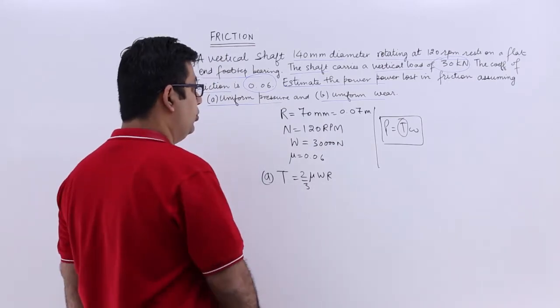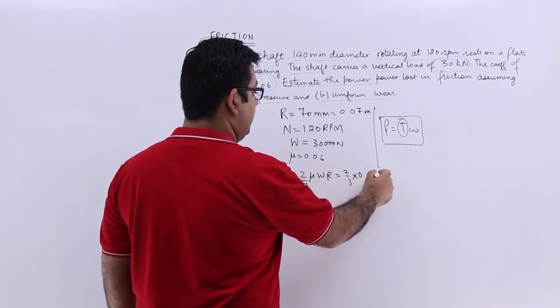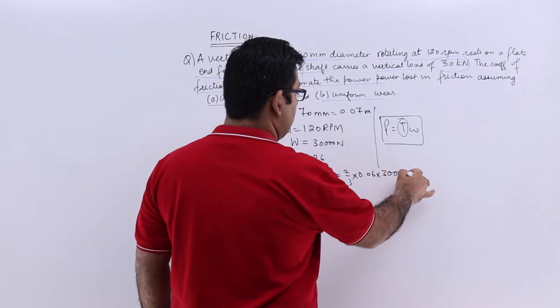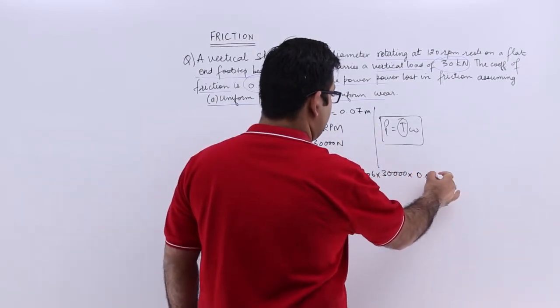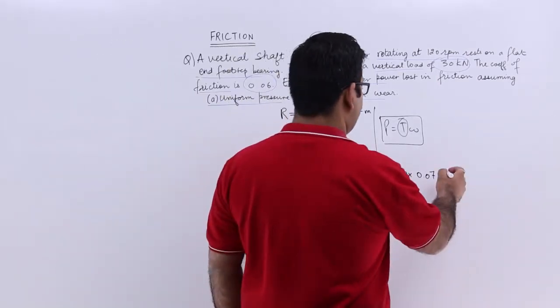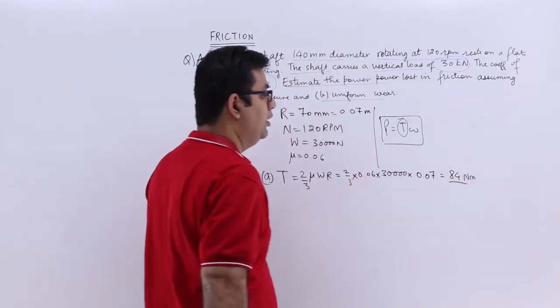So this would give you 2 by 3 into 0.06 into 30,000 into r is 0.07. This gives you T as 84 newton meters.